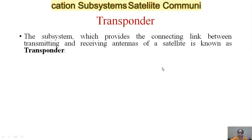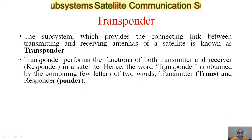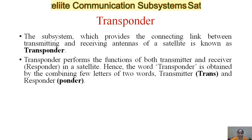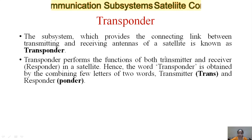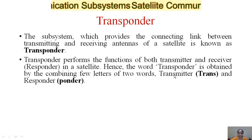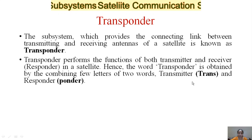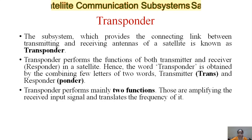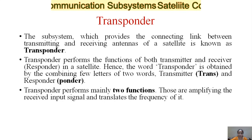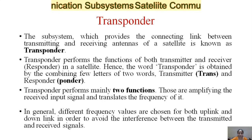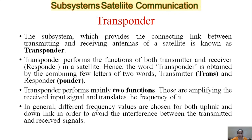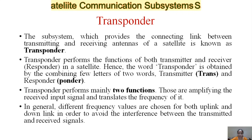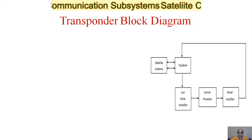The last subsystem is the transponder. Transponders are systems that provide the connecting link between the transmitting and receiving antennas of the satellite. A transponder performs the function of both transmitter and receiver — hence the word 'transponder' comes from 'transmitter' (trans) and 'responder' (ponder). A transponder performs two functions: amplifying the received input signal and translating the frequency of that signal. Different frequency values are chosen for uplink and downlink to avoid interference between transmitted and received signals.